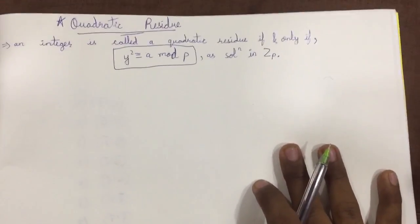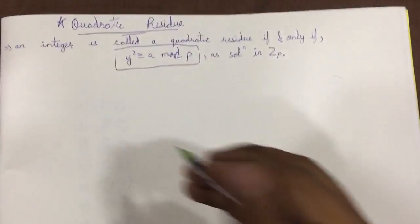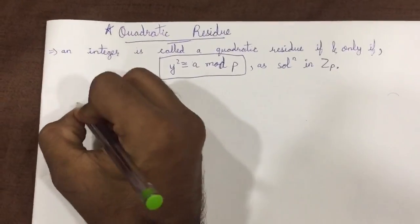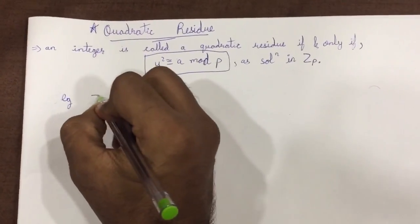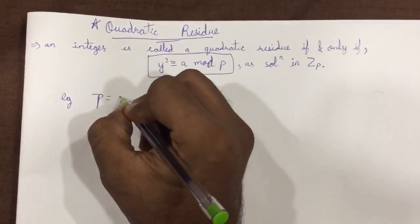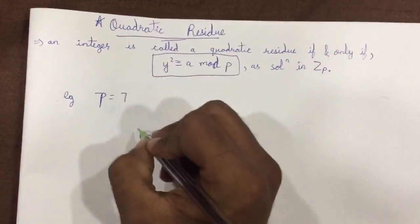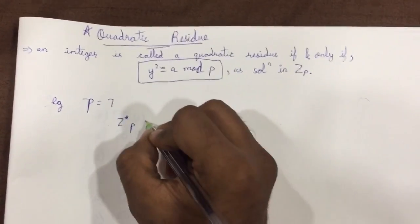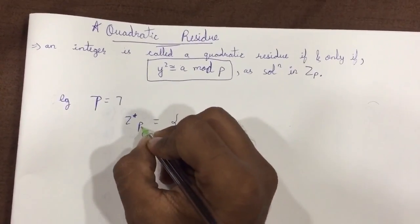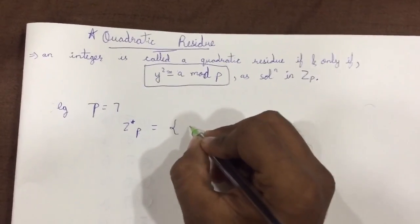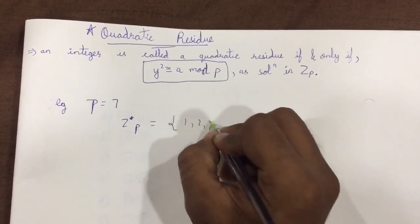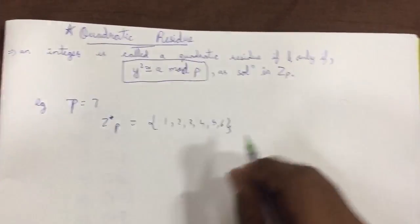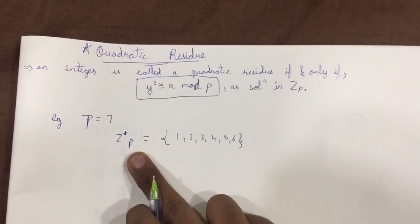Alright, so let us understand this equation by solving an example. Let us take p equal to 7. So Z*p, which is Z*7, will be equal to {1, 2, 3, 4, 5, 6}.